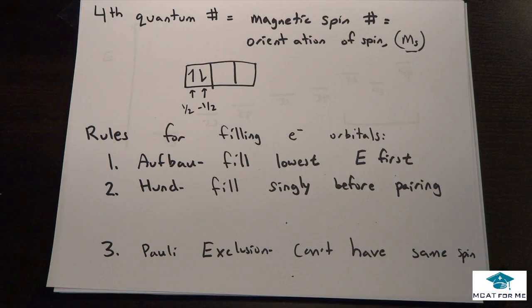And so there are some rules for filling these electrons in these orbitals or in these block diagrams. And there's three of them. And so the first one is we want to fill the lowest energy level first. And we'll see which ones are the lowest and which ones are the highest energy levels that we'll deal with. The next one is Hund's rule, which is we fill each of the orbitals singly before pairing.